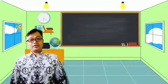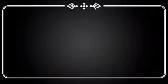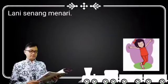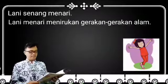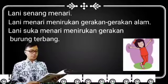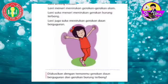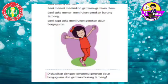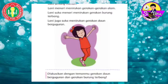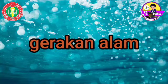Selanjutnya, kita masuk ke Ayo Berdiskusi. Ayo kita dengarkan teks yang akan saya bacakan. Lani senang menari. Lani menari menirukan gerakan-gerakan alam. Lani suka menari menirukan gerakan burung terbang. Lani suka menirukan gerakan daun berguguran. Apa yang sudah dilakukan oleh Lani? Lani ternyata sedang menirukan gerakan-gerakan alam, terutama burung terbang dan daun berguguran. Gerakan-gerakan tersebut memiliki gerakan yang cepat dan lambat.